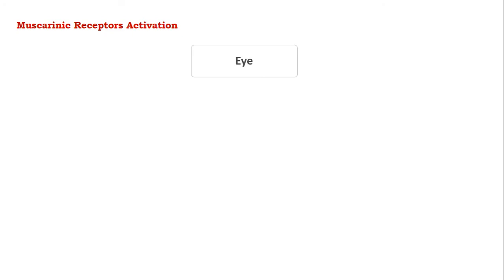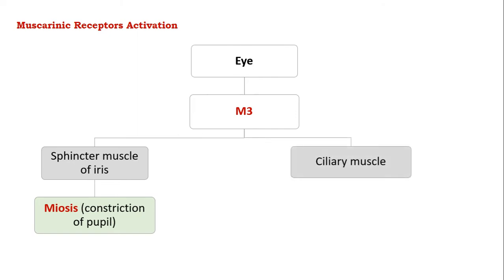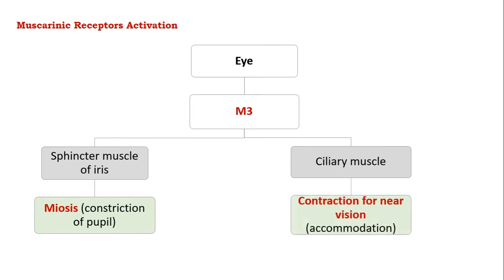Coming to the muscarinic receptors activation, first on the eyes: the muscarinic agonist will act on M3 receptors present in the eye, especially in the sphincter muscles of the iris, to cause miosis, that is constriction of the pupil. It also acts on the ciliary muscles to produce contraction for near vision, which is called accommodation.